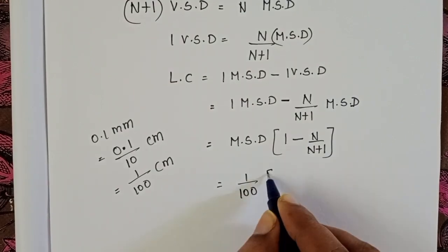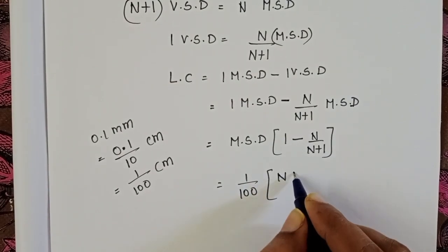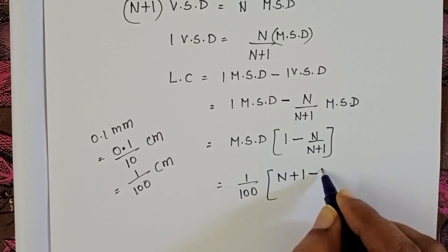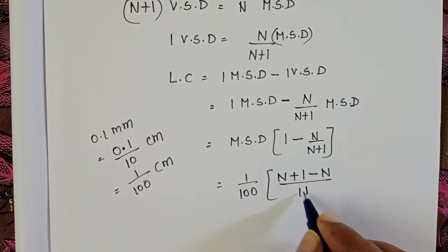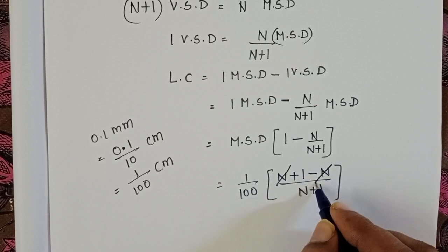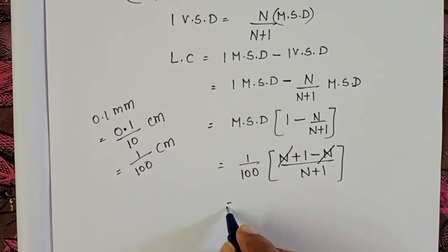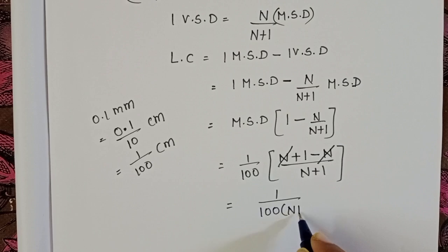1 by 100 into (n+1). (n+1) minus n by (n+1). n plus 1 minus n get cancelled.